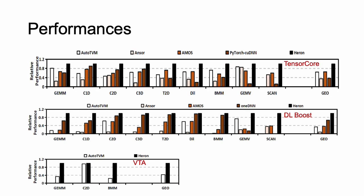Next, I am going to talk about the evaluation results. First, we compare Heron with baselines on nine typical deep learning operators. The experiments are conducted on three deep learning accelerator platforms, including TensorCore, DLBoost, and VTA. We compare with state-of-the-art automatic generation approaches, including AutoTVM, Answer, and Amos. We also compare with vendor-provided libraries, including PyTorch kernels with cuDNN as the backend and oneDNN. The results show that Heron outperforms automatic generation approaches by 2.7 times and vendor-provided libraries by 2 times.